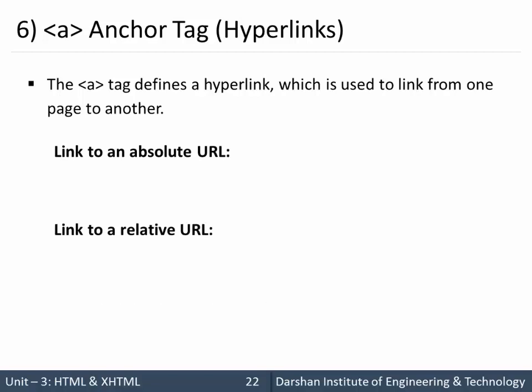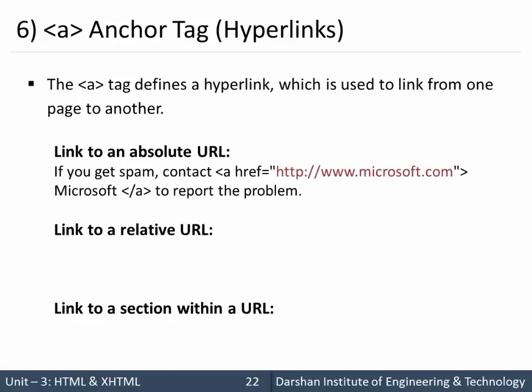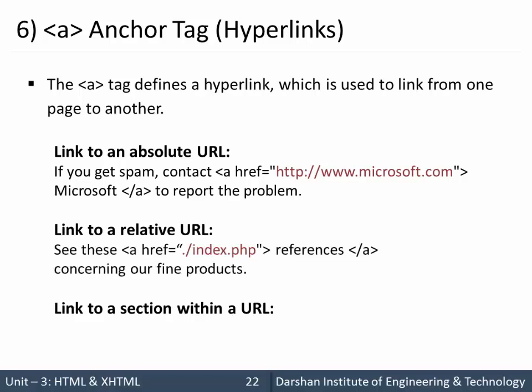An absolute URL specifies an absolute path — for example, if we want to go to microsoft.com, we specify 'http://' followed by the full URL. A relative URL is something like './index.php' — for example, if I am on contact.php and want to navigate to index.php in the same folder, I can specify a relative path. For within-section navigation on a one-page website, we can navigate from top to bottom using a hash '#' followed by the section name.